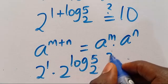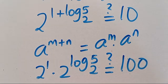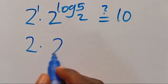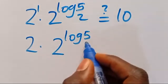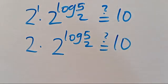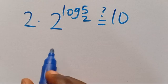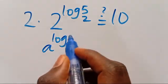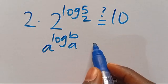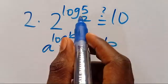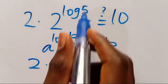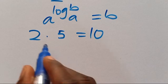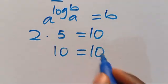From here we have 2 to the power of (1 plus log₂5), which gives 2 multiplied by 2 to the power of log₂5, equals 10. Recall that when we have a to the power of log b in base a, and the base matches, the output is simply b. So 2 to the power of log₂5 equals 5. Therefore the result is 2 times 5, which equals 10. Verified!